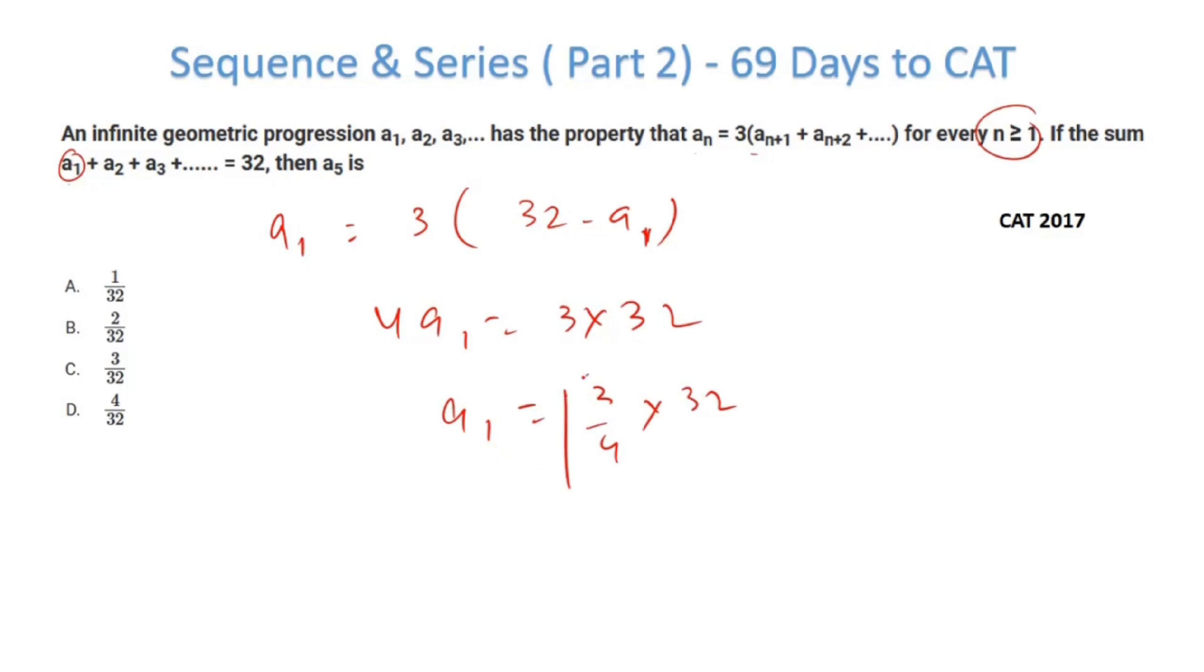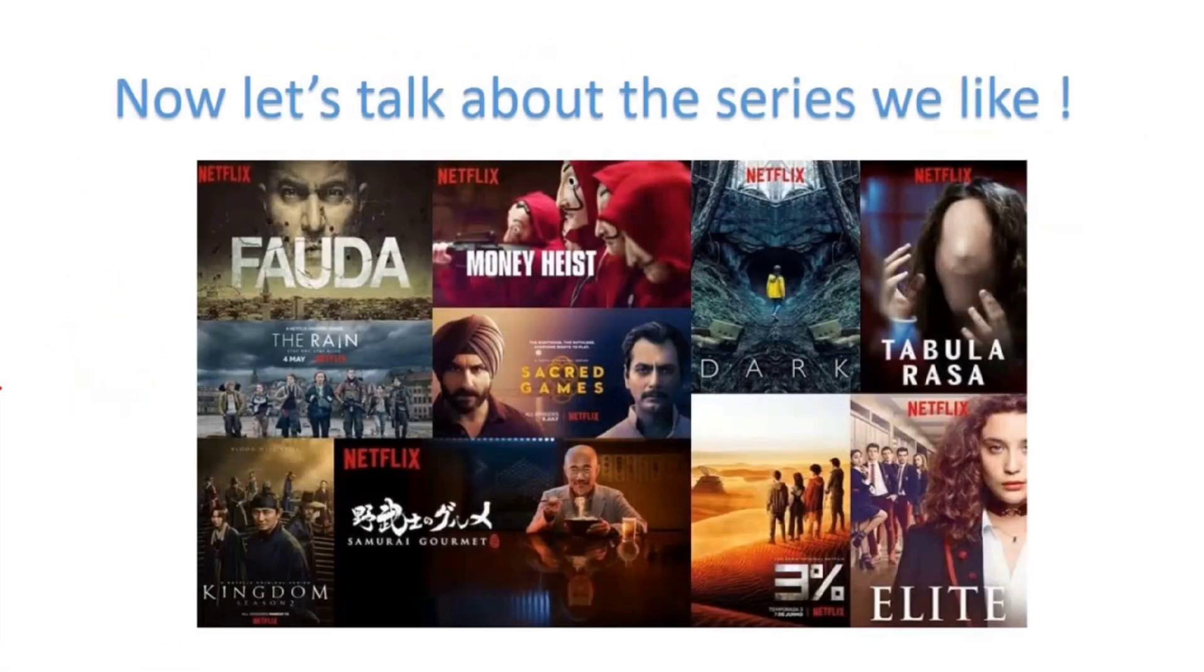So now if you just solve this, 4a₁ = 3 × 32, so a₁ becomes 3/4 × 32, this becomes 24. Now have a look at the pattern. I've got a₁. Similarly I'll calculate a₂, similarly I'll calculate a₃. What is going to happen? The numerator will always have a 3. Hence, if you want to solve it, you can solve it, but the answer to this question is answer option C.